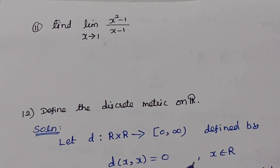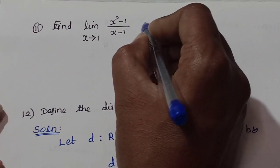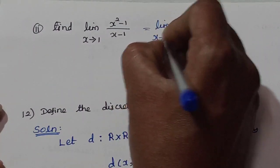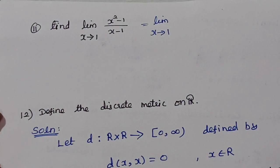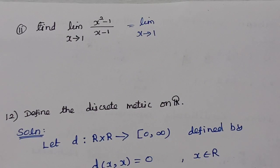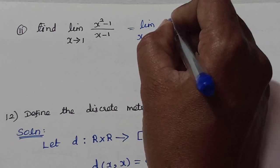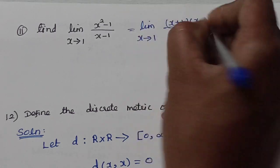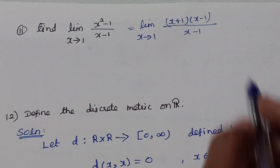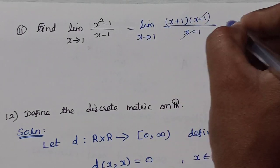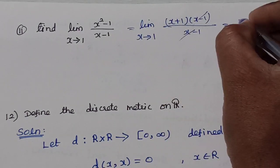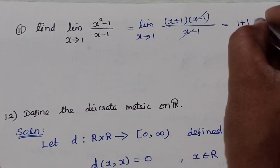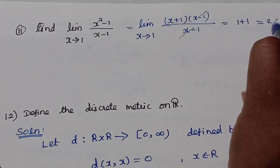For the limit computation, we apply factorization. The numerator x² − 1 can be factored as (x+1)(x−1). After factorizing, common factors cancel, and we apply the limit to get x² + 1 evaluated appropriately. The result is 1 + 1 = 2, so the given limit is 2.